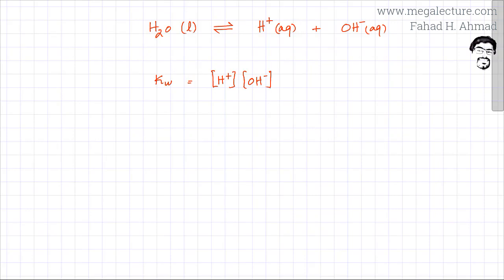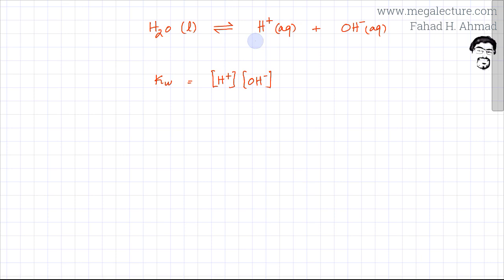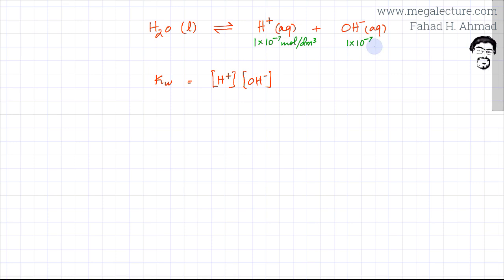In the previous lecture, we introduced KW. Water dissociates or ionizes very weakly, producing H⁺ and OH⁻ ions, setting up a reversible reaction. The concentration of H⁺ ions in water at room temperature and standard temperature and pressure is 1×10⁻⁷ mol per dm³. Similarly, the concentration of OH⁻ ions is exactly the same, because both ions are produced in equal quantities according to the ratios in the equation.